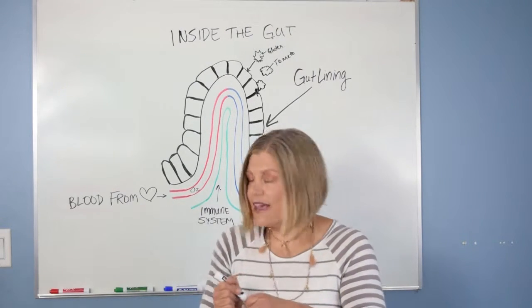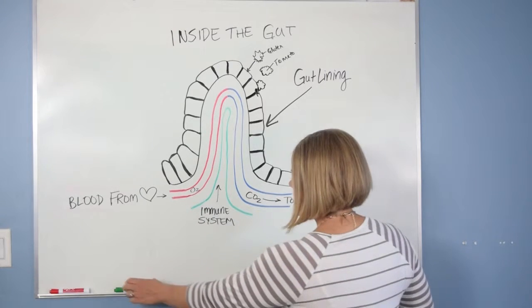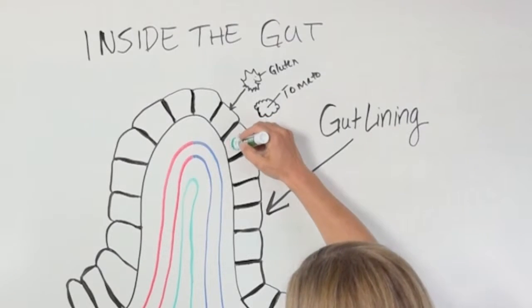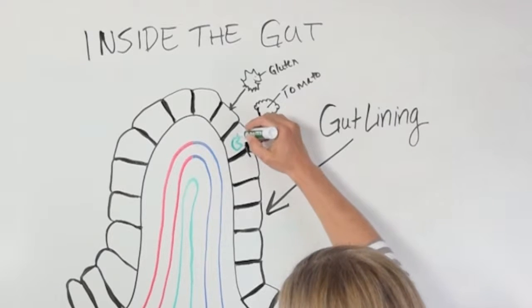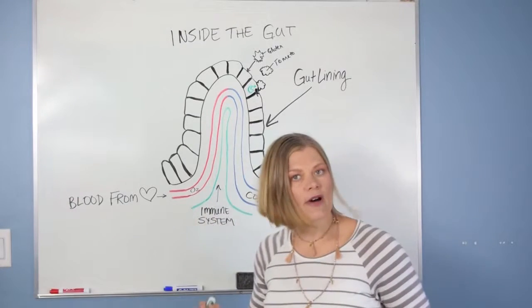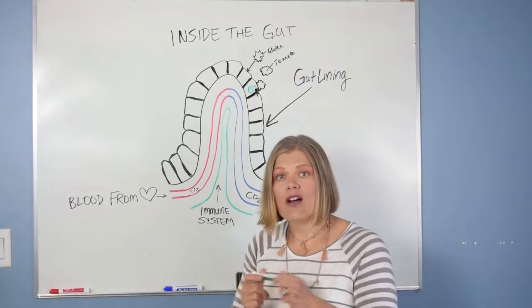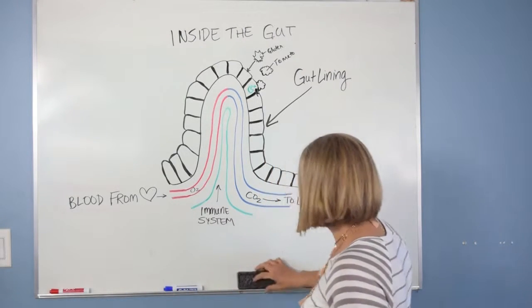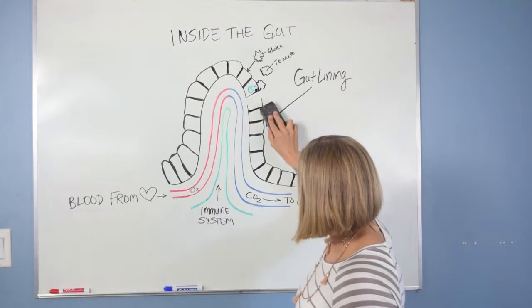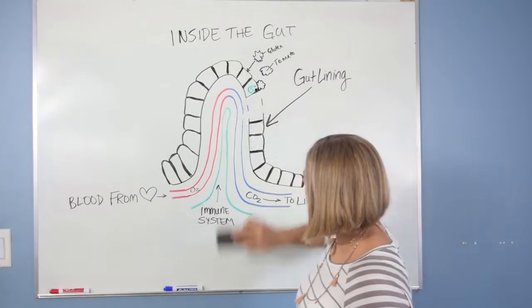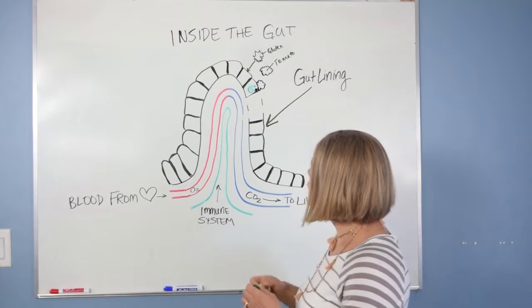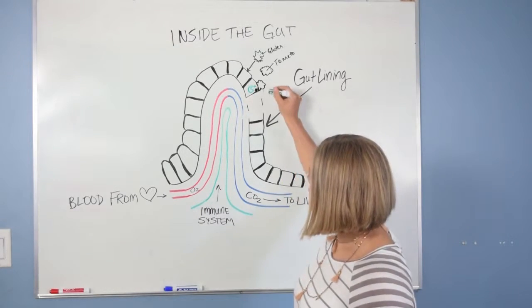Some of our good white blood cells come in and start to attack those cells — it's an immune system attack happening right on the digestive system lining. I like to draw them much like Pac-Man. These guys are coming in and they're going to try to gobble up these molecules. But in all that process, we end up with holes in between our cells.